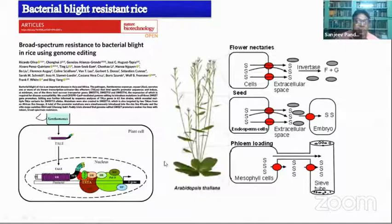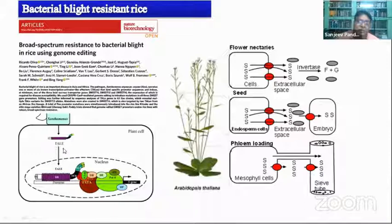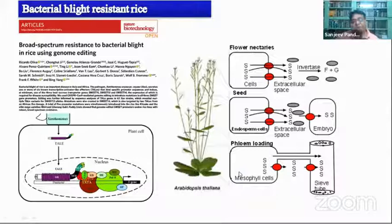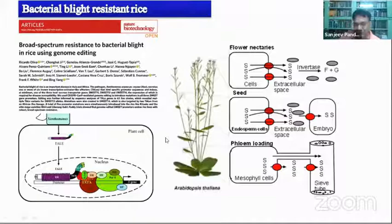Blight-resistant plants were also developed using CRISPR-Cas9. Bacteria such as Xanthomonas deliver a protein called TAL — a transcription activator-like element — that binds plant genes, causing overexpression of products beneficial for bacterial growth. Scientists targeted the SWEET gene, which is required for transport of sucrose from source cells to sink cells. By mutating the SWEET gene with CRISPR-Cas9, less sucrose is available for bacteria to grow in the extracellular spaces, resulting in blight resistance.